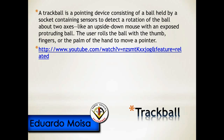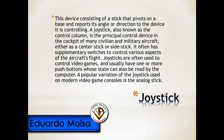A joystick is a device consisting of a stick that pivots on a base and reports its angle or direction to the device it is controlling. Also known as the control column, it is the principal control device in the cockpit of many civilian and military aircraft, either as a center stick or side stick. It often has supplementary switches to control various aspects of the aircraft's flight and usually has one or more push buttons whose states can also be read by the computer.